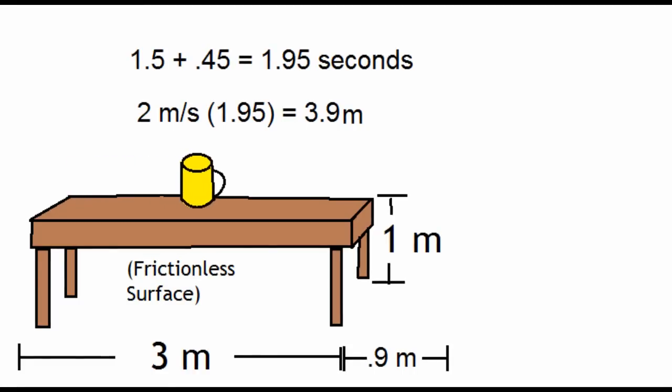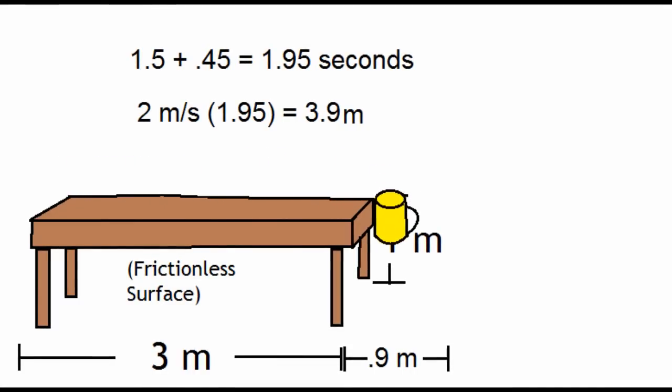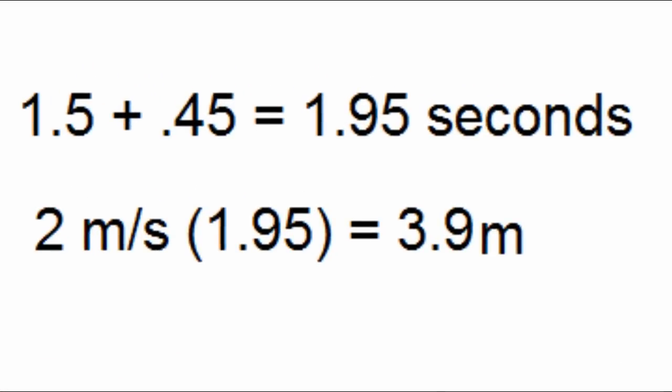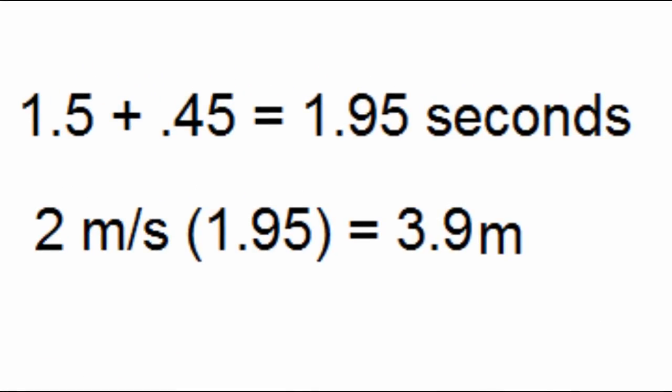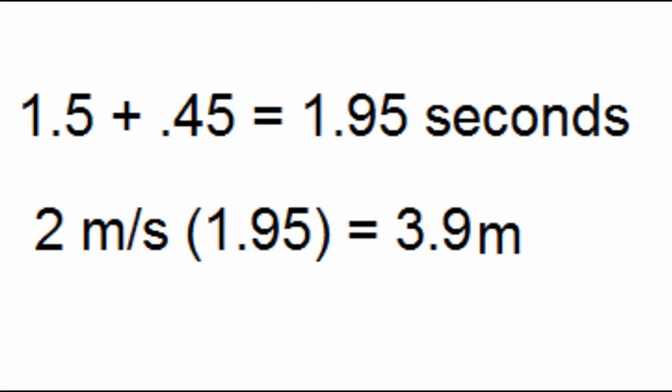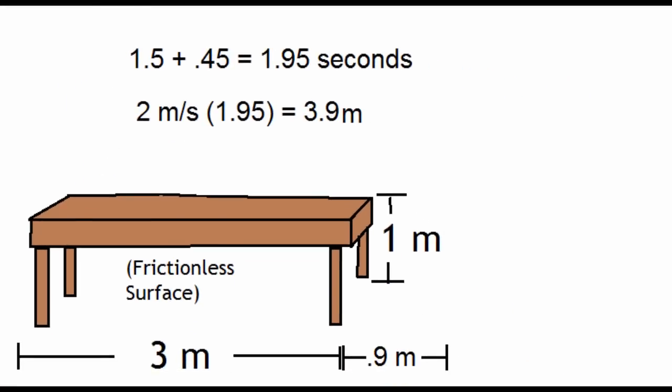Alright, now we take the 1.5 seconds that it takes for the coffee cup to travel across the table. Then add the .45 seconds that it takes for the coffee cup to hit the ground. So we get 1.95 seconds. Then we plug it into the horizontal velocity equation, so it's just 2 times 1.95 equals 3.9 meters. So it traveled 3.9 meters from the start, or .9 meters from the edge of the table, and it took 1.95 seconds.